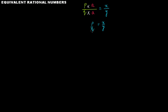It's exactly similar to what we have learned in the case of fractions when we find equivalent fractions — we do the same thing. So this x over y is an equivalent rational number of p over q, and therefore these two will be equal.